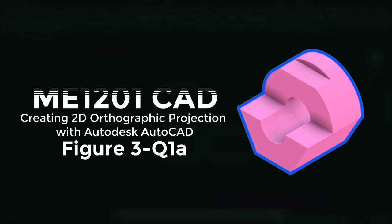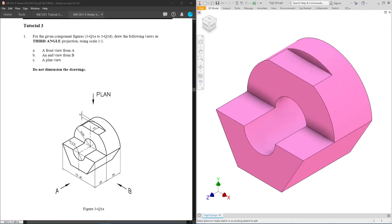Hello everyone, welcome to another video on creating 2D orthographic projection drawings using Autodesk AutoCAD for figure 3, question 1a. Let's turn to page 3-8 of your notes and take a look at the question for today. For tutorial 3, you have to create the orthographic projection drawing in third angle projection with an actual scale of 1 to 1.